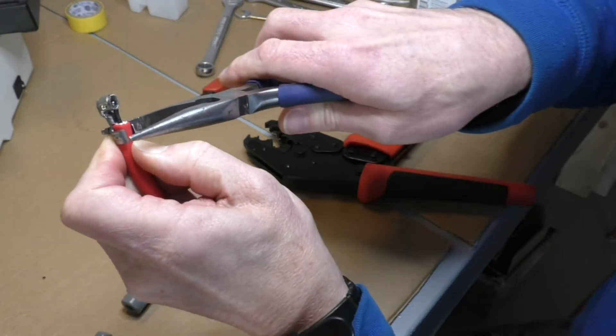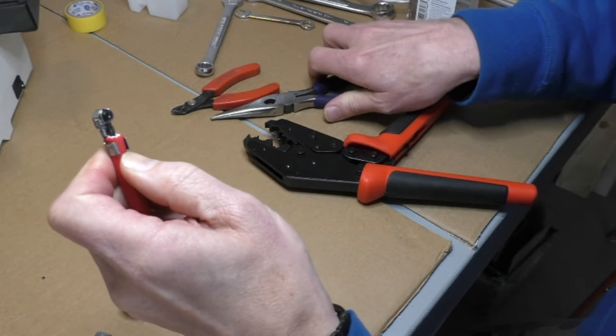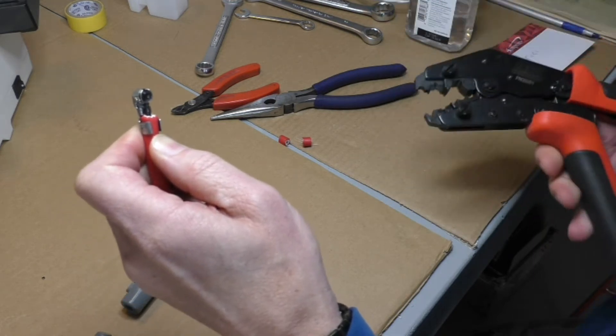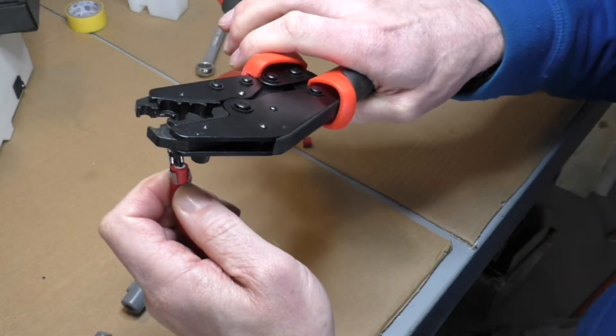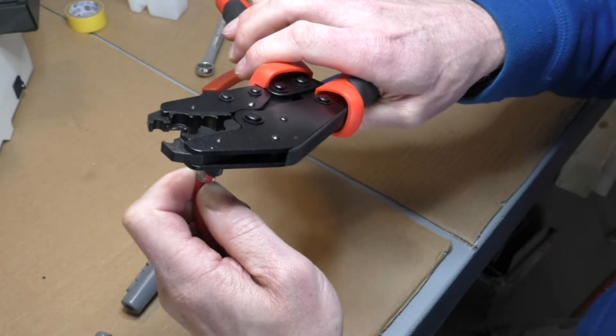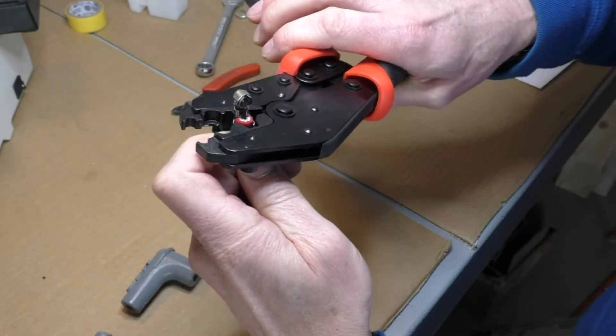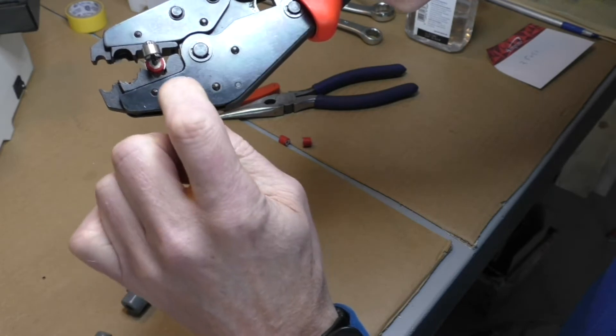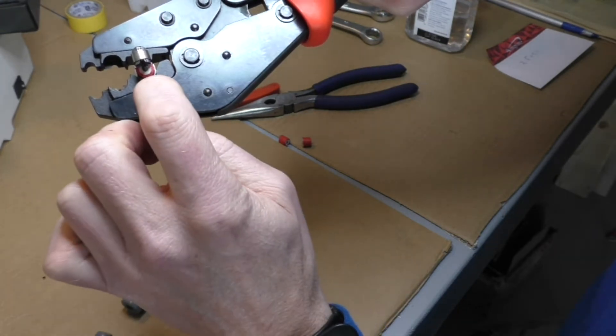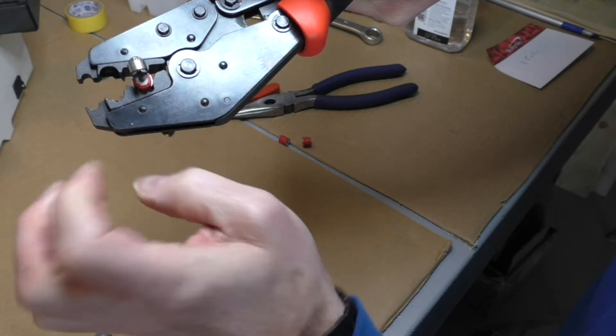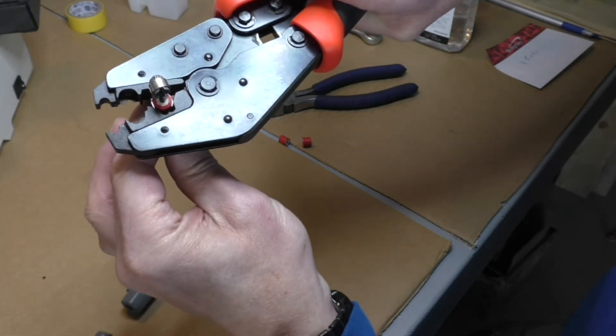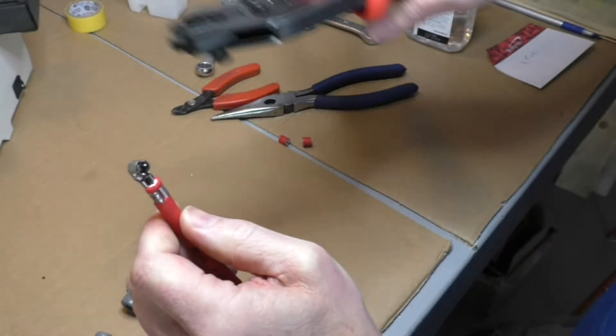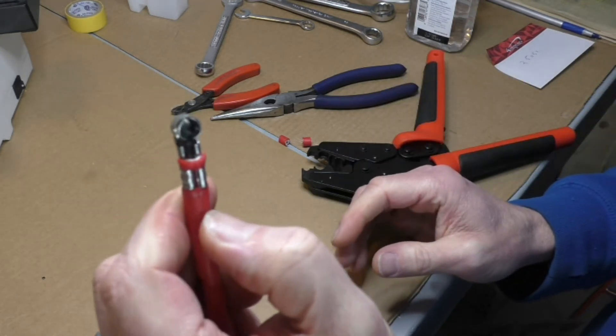Just going to crimp these very slightly here with a pair of pliers. We're going to take our tool here. And hopefully you can see that this shape here goes on the upper part of the terminal and the round part supports the lower end of the terminal. We're just going to squeeze here. See that does a nice crimp.